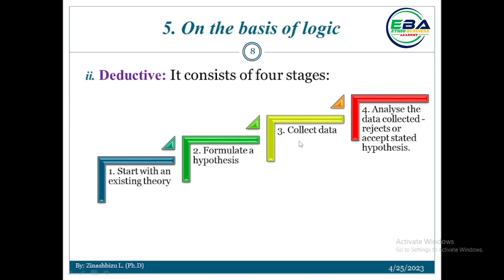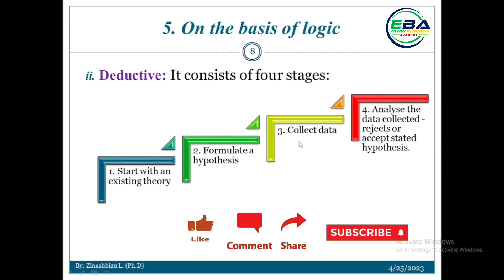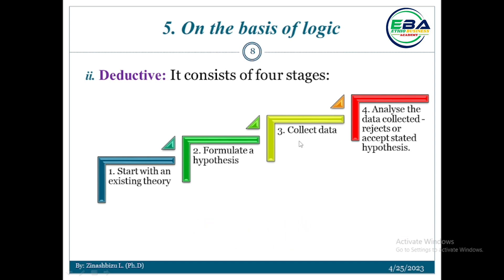We collect data to test the stated hypothesis in order to accept or reject the null hypothesis. There are two types of hypothesis: the null hypothesis and the alternative hypothesis. The fourth stage is to analyze the data collected in order to decide whether to accept or reject the stated null hypothesis.